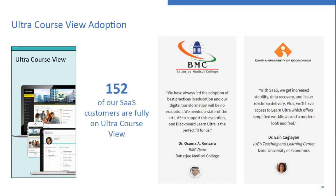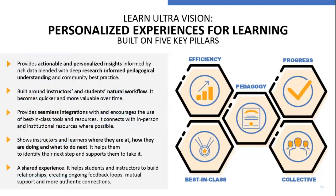We now have 152 customers that are essentially 100% on the ultra course view. Shifting into the product roadmap, I want to transition to something we've been spending a lot of time on: our Learn Ultra product vision and product direction — where do we want to go in the next three to five years, what areas do we want to focus on, and what are we not going to do? I'm a strong believer that the VLE or LMS can't be everything to everyone.